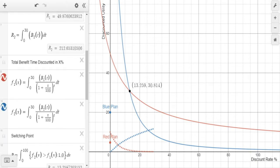Right here we have a switching point. So as our discount rate goes, or as our desire for now as opposed to later grows, the red plan becomes a better option. But at lower rates, the blue plan is the better option.